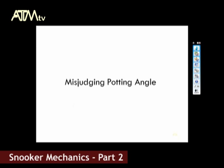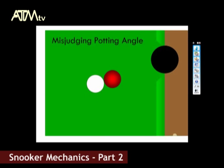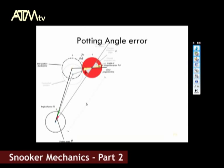Now, what happens if we make a mistake when we pot — exactly how much error do we make? If we take our previous diagram and draw in our error, we can look at it geometrically again. Using our previously found relationship, substituting theta plus delta theta as our new potting angle, and phi plus delta phi as our new projection angle, we can obtain that equation.